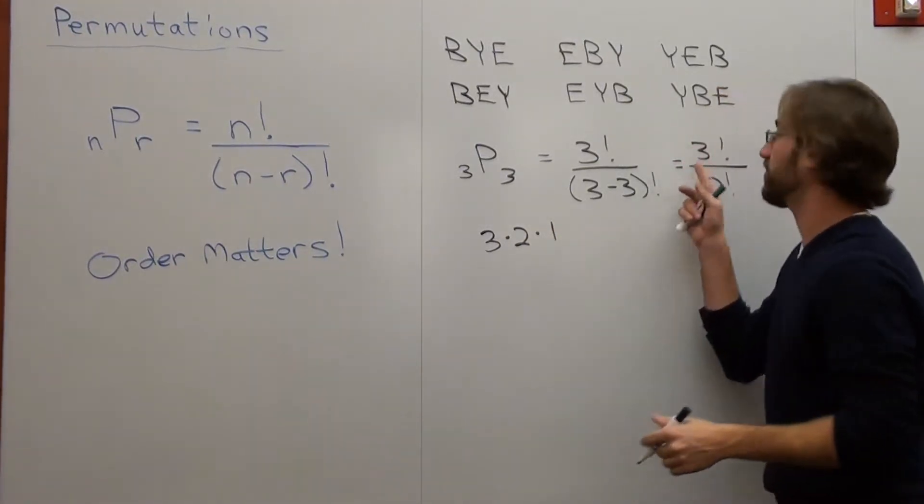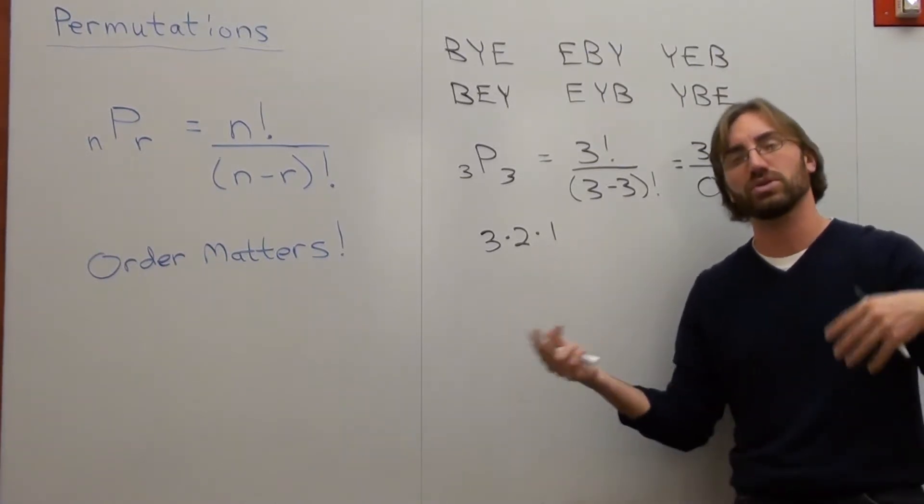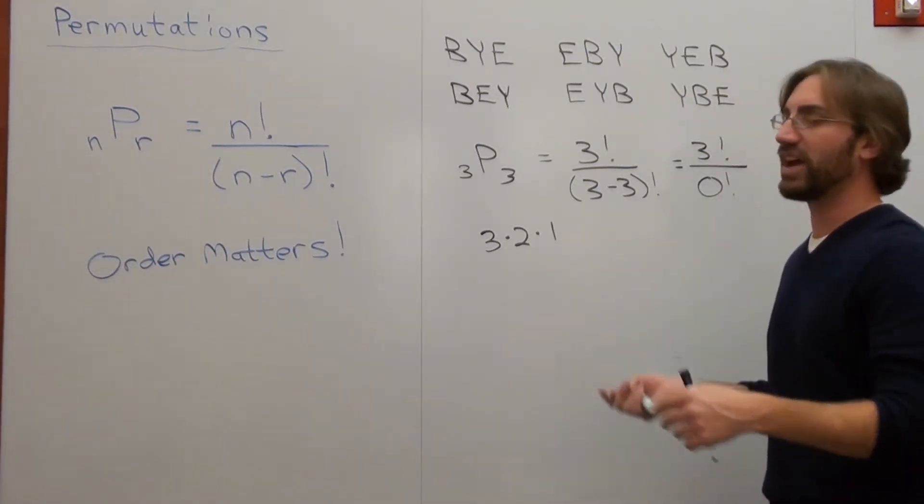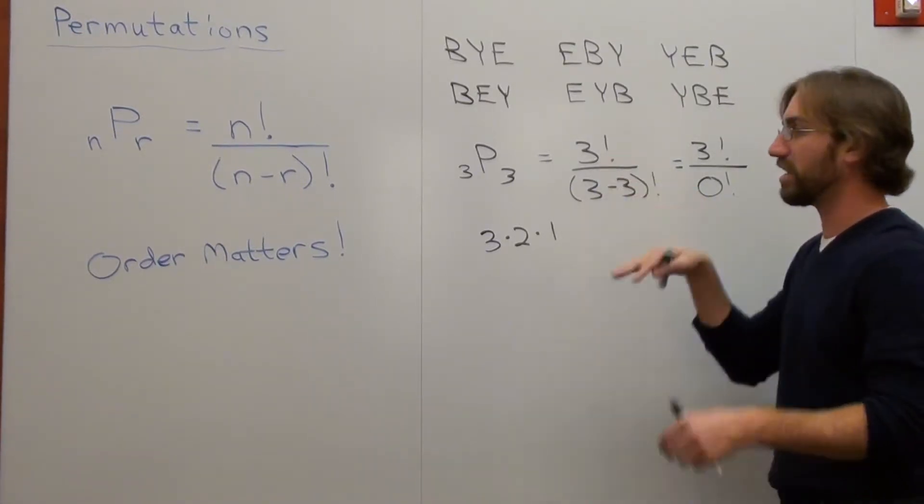Three factorial can be written as three times two times one. That's all you really do. If it was five factorial, it would be five times four times three times two times one. If it's three factorial, it's three times two times one. If it's seven factorial, it's seven times six times five times four times three times two. You just basically start with that number and you keep going down.